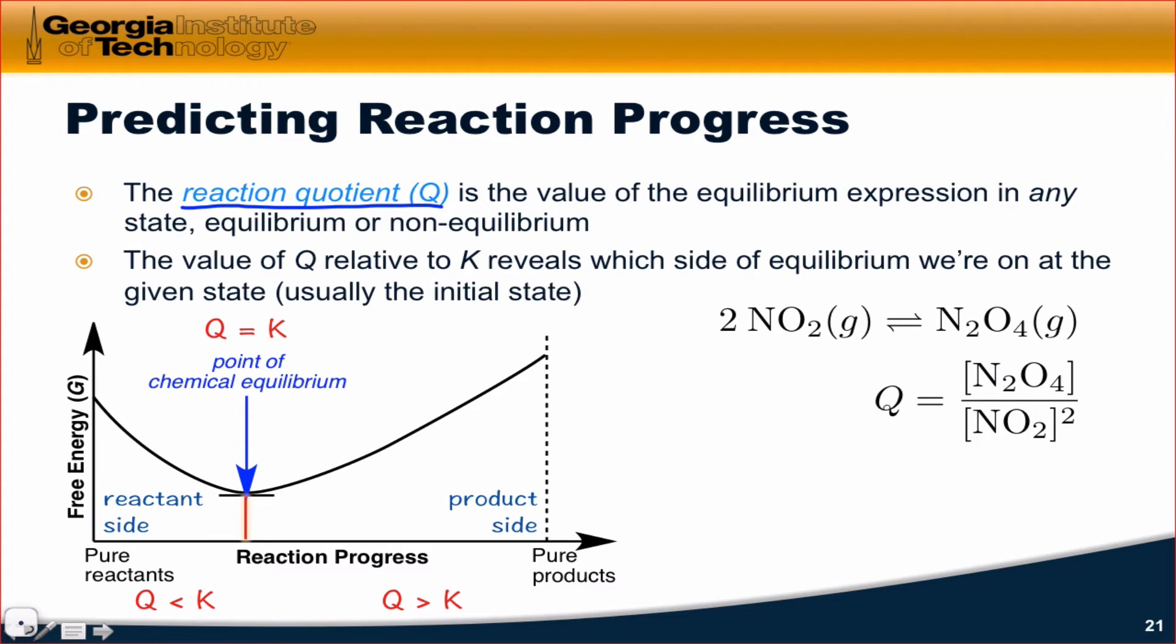Q is conceptually very simple. We take the form of the equilibrium expression, and we simply relax the requirement that those concentrations have to be at equilibrium. Q is the value of the equilibrium expression under any conditions, equilibrium or non-equilibrium.